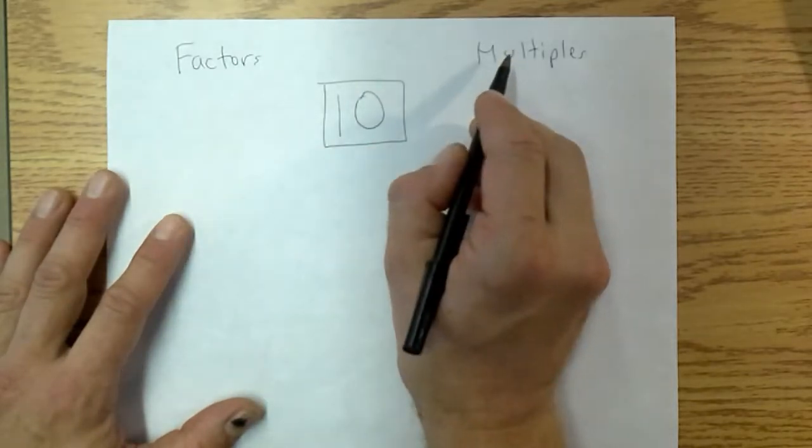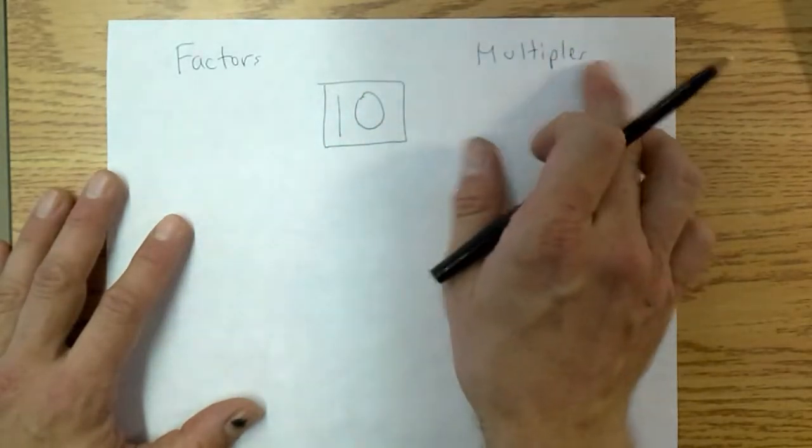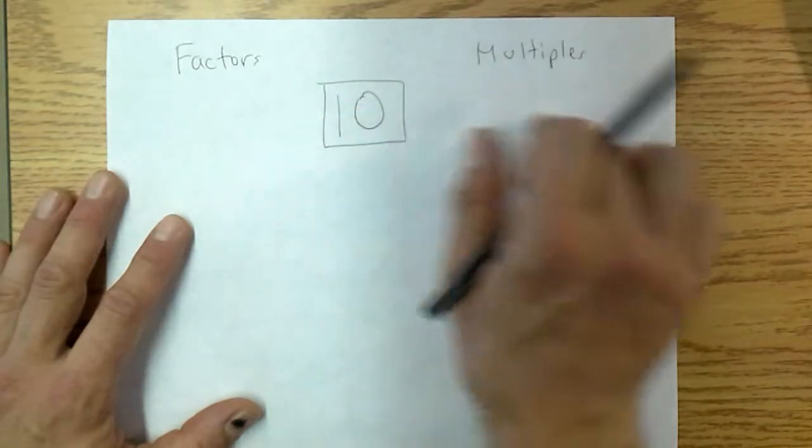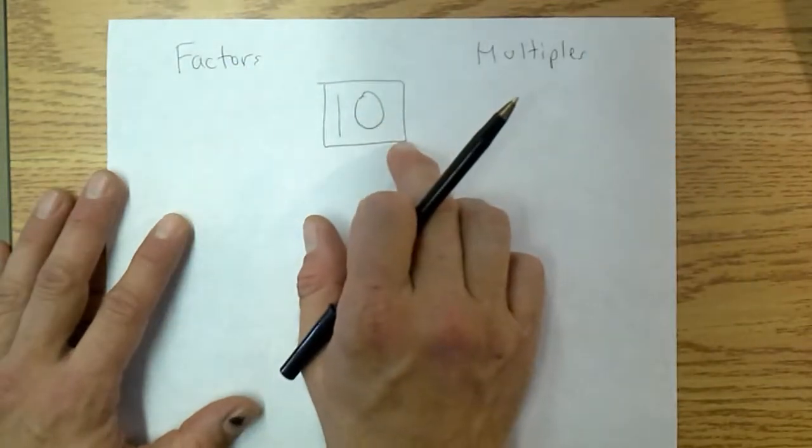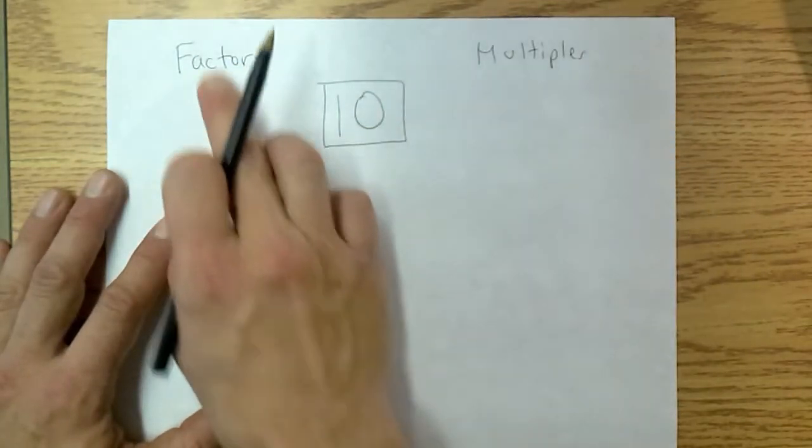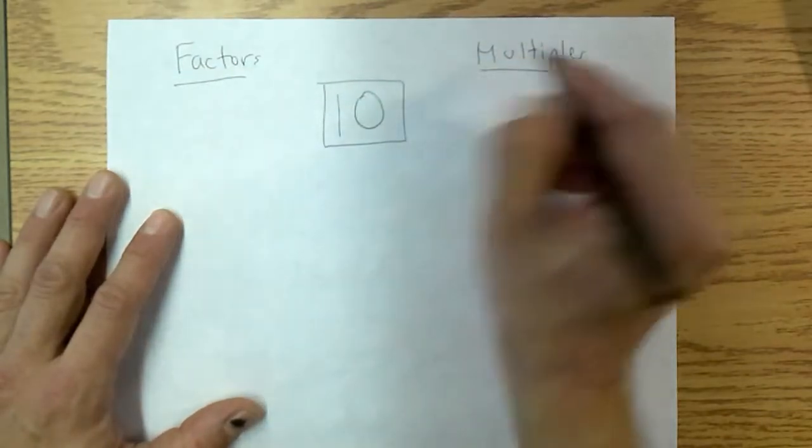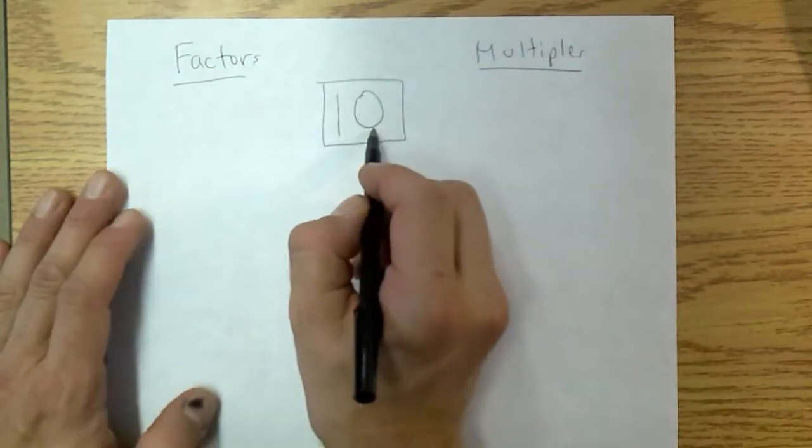I put factors here and multiples here on purpose because multiples are always bigger than the number, or they start at that number and then get bigger, and factors are that same number and smaller. So let's take a look at it. Factors are simply what numbers multiply together to give you that number.